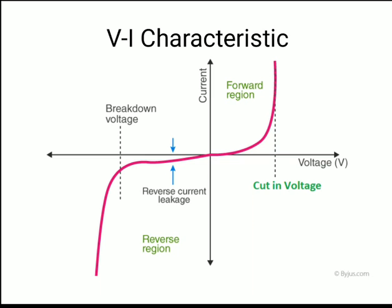In reverse bias, a very small leakage current flows in the microampere range. This continues for a period, but beyond a certain voltage, the current suddenly starts flowing — this voltage is known as the breakdown voltage. This behavior is shown in the third quadrant of the V-I characteristic.